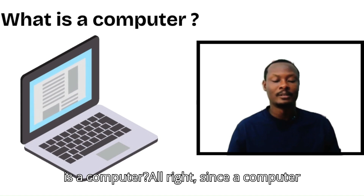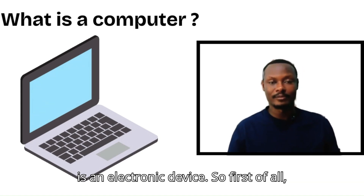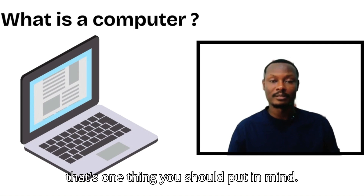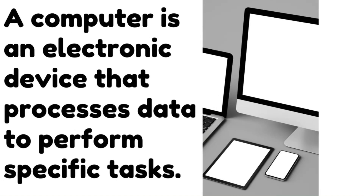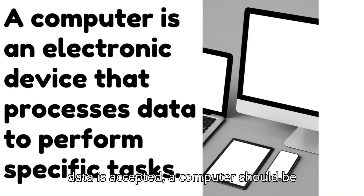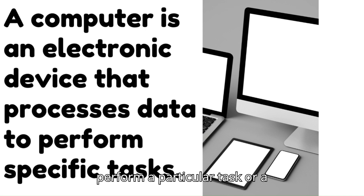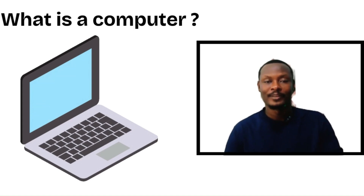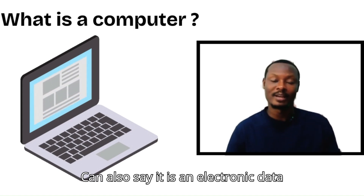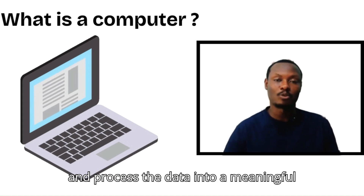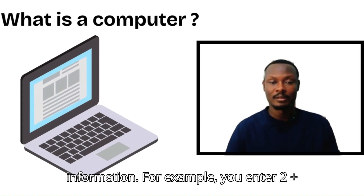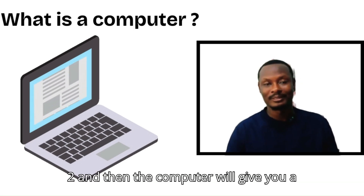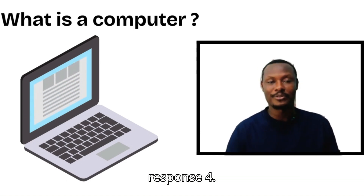What is a computer? A computer is an electronic device — that's the first thing to keep in mind. It is an electronic device that accepts data, processes that data to perform a specific task, and converts it into meaningful information. For example, you enter two plus two and the computer gives you a response.